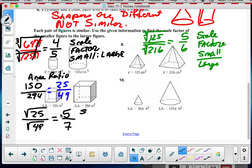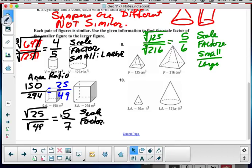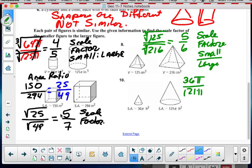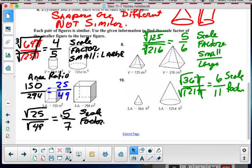Scale factor of small to big. Same idea is going on in the 10. I got 36 pi to 121 pi. Pies are going to knock each other out. And now, I take the square root. And I've got 6 to 11 scale factor. Now, I'm going to be using those scale factors on future problems. But I'm hoping that you understand how to get them.